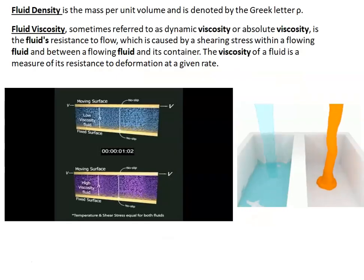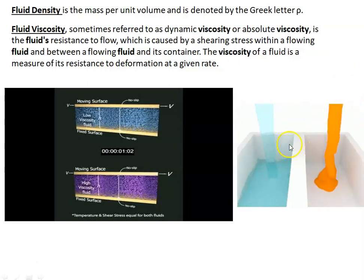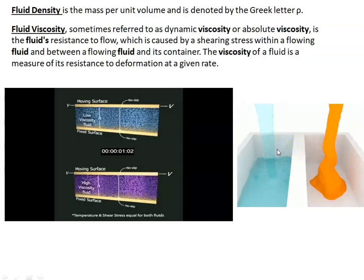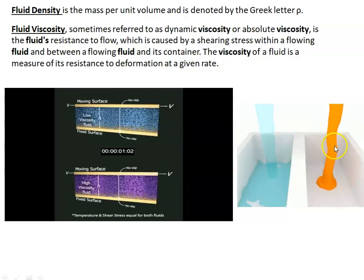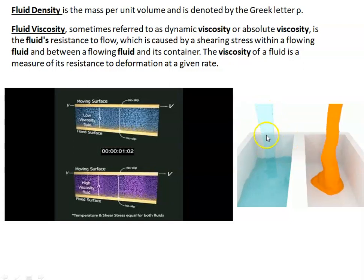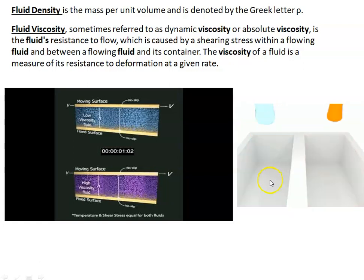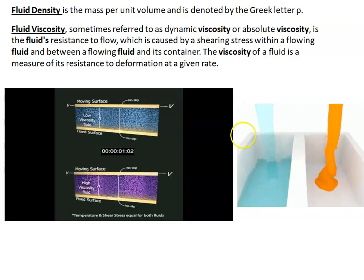Now, fluid density and viscosity. Viscosity is the resistance of a fluid. Look at this animation: the fluid with higher viscosity has higher resistance and flows more slowly, while the fluid with lower viscosity has less resistance and fills the tank much more quickly. Density is mass per unit volume and is denoted by the Greek letter rho.